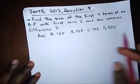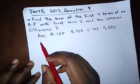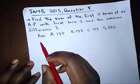Here we have a question. It says, find the sum of the first 11 terms of an AP with first term 2 and common difference 3.